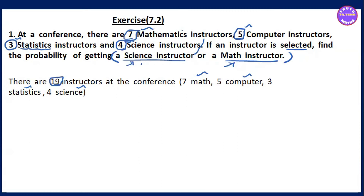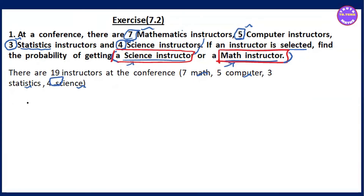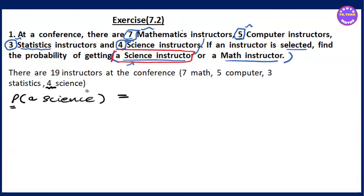The probability of being a science instructor: n(E) for science is 4, so P(science) = n(E) by n(S) = 4 by 19.